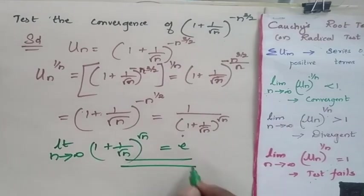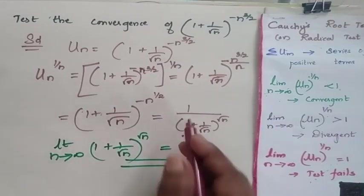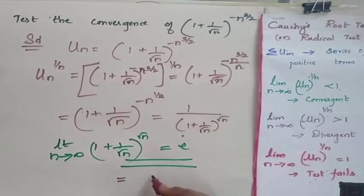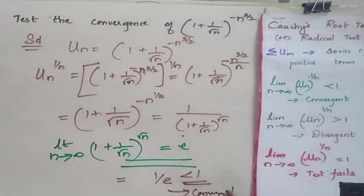So now when I look at this, it is equal to 1/e. This 1/e is less than 1, and so this is convergent.